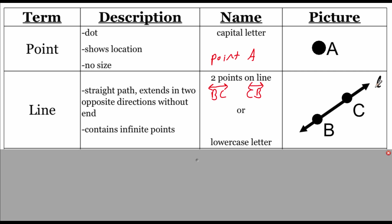Now if you also look in the picture, there's this lowercase L — it doesn't have a point because there's no dot next to it. That's what I mean when I say we can use a lowercase letter to name a line. We could just call this thing line L.